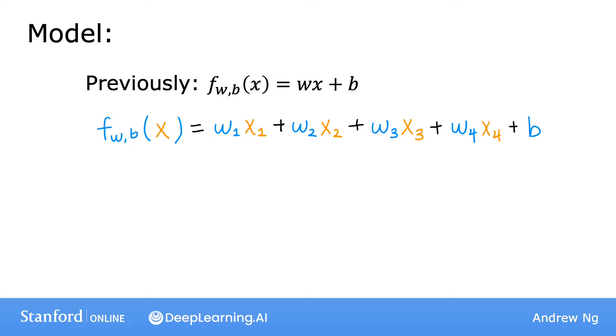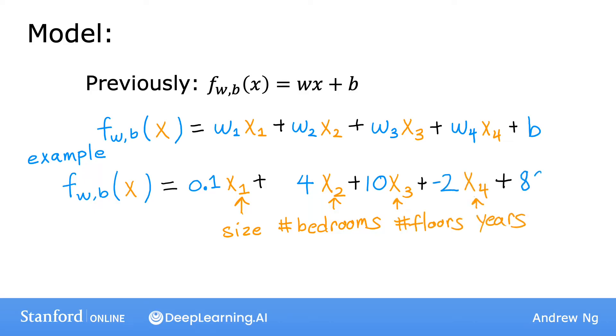Concretely, for housing price prediction, one possible model may be that we estimate the price of the house as 0.1 times x1, the size of the house, plus 4 times x2, the number of bedrooms, plus 10 times x3, the number of floors, minus 2 times x4, the age of the house in years, plus 80.